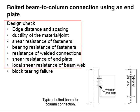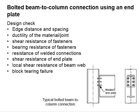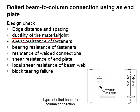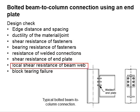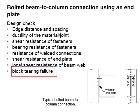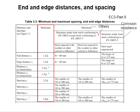This list outlines the checking criteria for the connection. As there are bolted connections, bolt holes are created on the end plate, so we need to check for the edge distance and the spacing. Next, we check for the ductility of the joint, the shear resistance of the bolt, the bearing resistance of the bolt hole, the weld between the plate and the beam, the shear resistance of the end plate, the local shear resistance of the beam web, and lastly, block tearing failure.